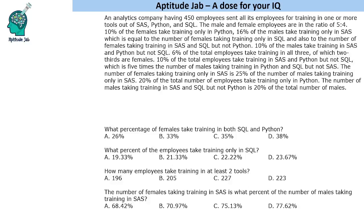Welcome to Aptitude Jab. This is a set based on Venn diagrams. An analytics company has 450 employees and sent all its employees for training in one or more tools out of SAS, Python, and SQL. Since all employees are sent for training in one or more tools, no one has none of the trainings.